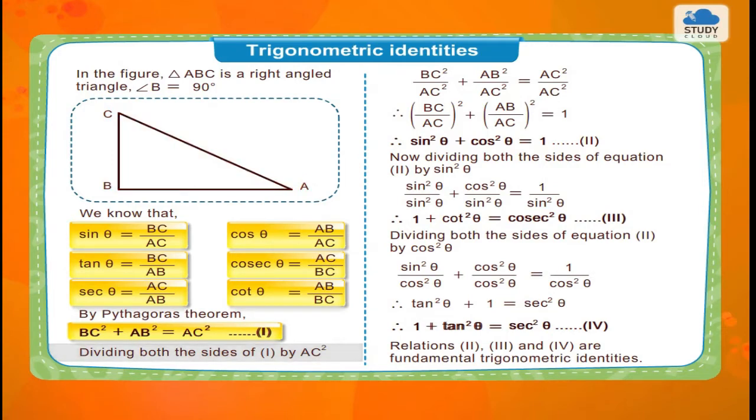Dividing both the sides of equation 1 by AC², BC² upon AC² plus AB² upon AC² is equal to AC² upon AC². Therefore, (BC upon AC)² plus (AB upon AC)² is equal to 1. Therefore, sin²θ plus cos²θ is equal to 1. Equation 2.